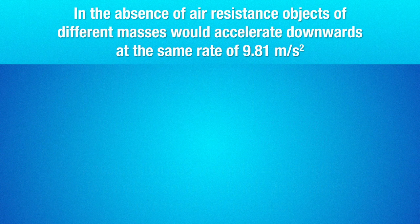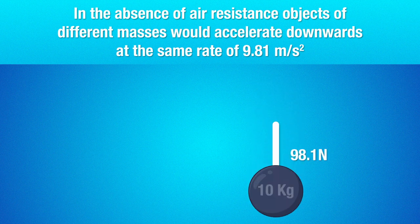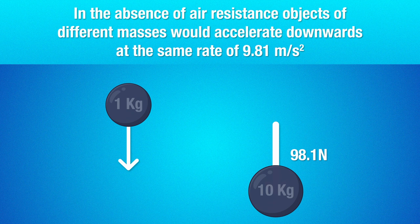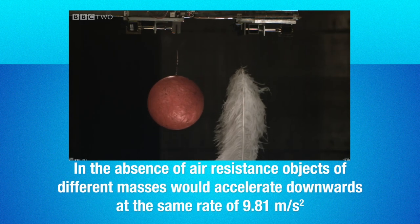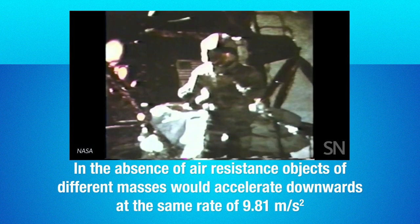Interestingly, if there were no air resistance, an object with a mass of 10 kg would accelerate downwards at the same rate as an object with a mass of 1 kg, that is 9.81 meters per second square. This is something that the first astronauts to the moon actually tested and found to be true.